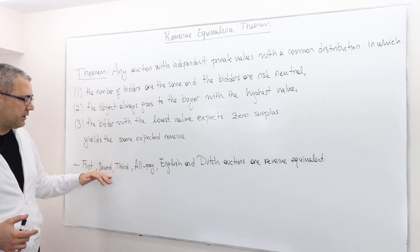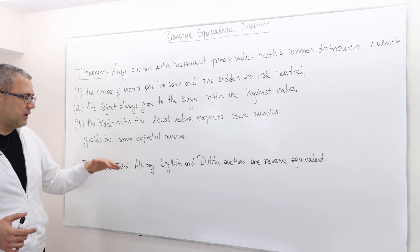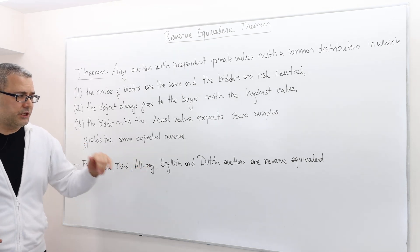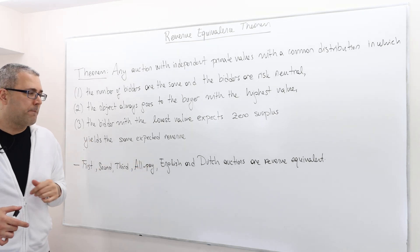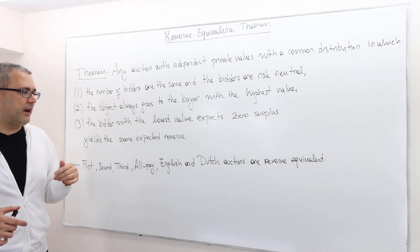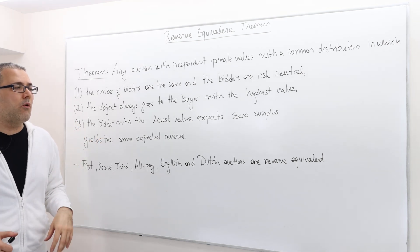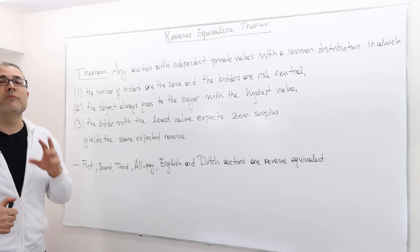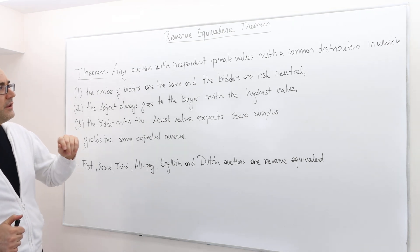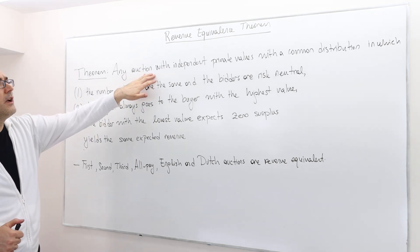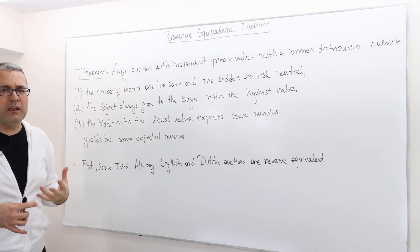So the first price, second price, third price auctions, all pay auctions, English and Dutch auctions are all revenue equivalent under the assumption that there's independent private values.